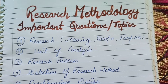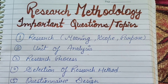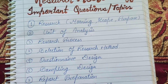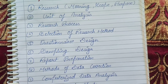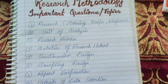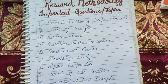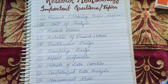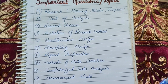Second unit comes from unit of analysis. Third comes from research process, which is a question every time. Fourth, selection of research method. Fifth, questioning design. Sixth, sampling design. Seventh, report preparation. Eighth, methods of data collection. Ninth, computerized data analysis. And tenth, measurement scale.